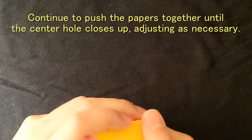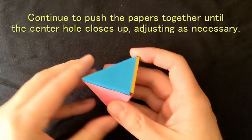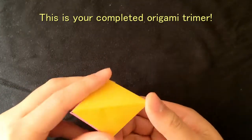Continue to push the papers together until the center hole closes up, adjusting as necessary. This is your completed origami trimer!